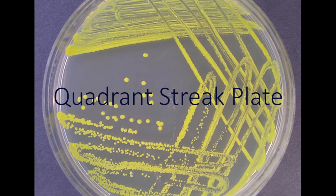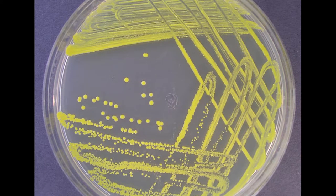The quadrant streak plate method is a method for obtaining isolated colonies of bacterial cells that may be later transferred to a new sterile medium in order to form a pure culture of that microorganism. This method decreases and dilutes the number of cells being spread to each set of streaks made on the surface of a solid medium.